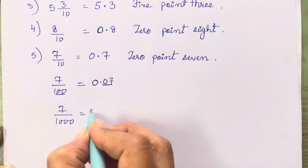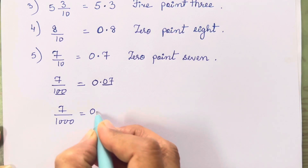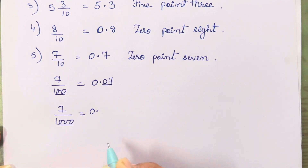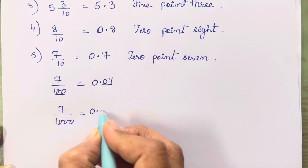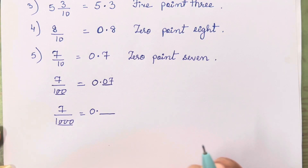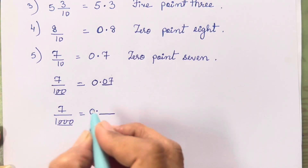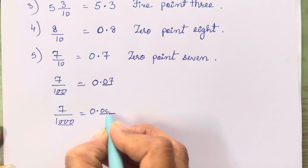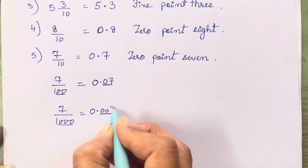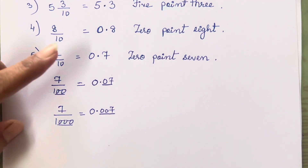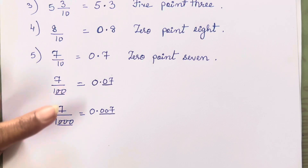For 7/1000, we first write 0. There are three zeros in 1000, so how many digits will we need after the decimal point? Three. So the first digit is 0, the second is 0, and the third one is 7 — giving us 0.007. Got the difference?